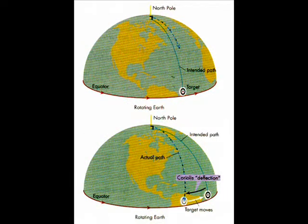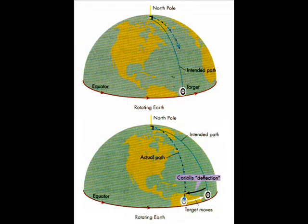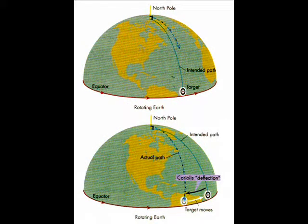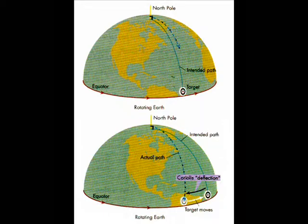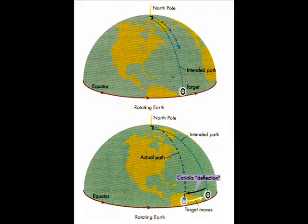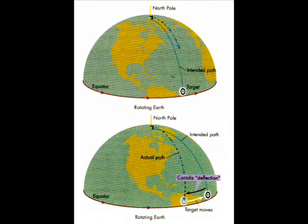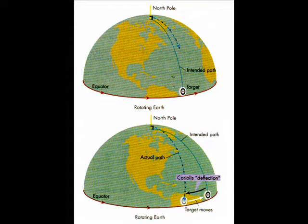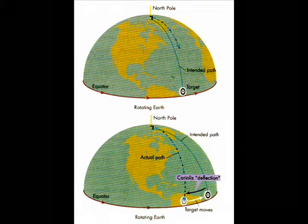This diagram sums it up rather nicely. As shown, if the Earth's angular velocity and latitude were not applied to the object's trajectory, it would miss the target by a large amount.